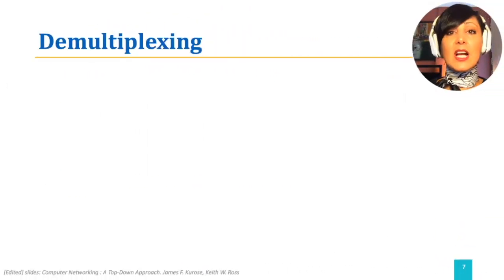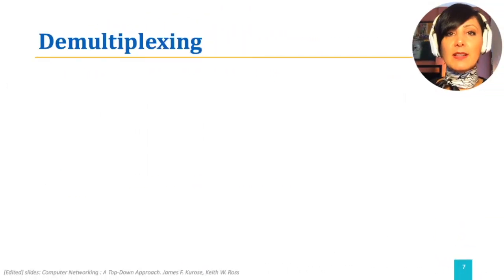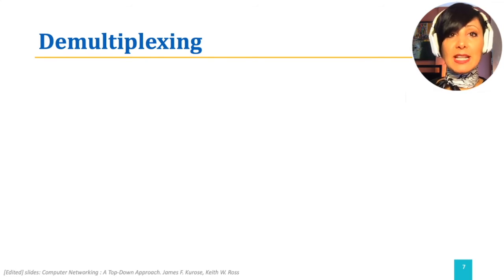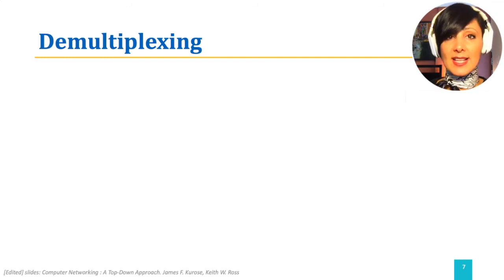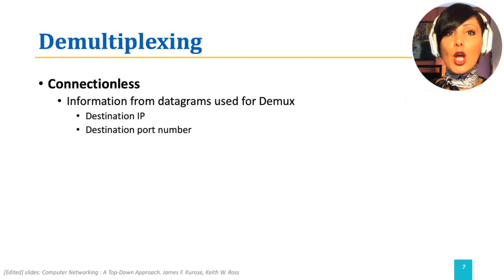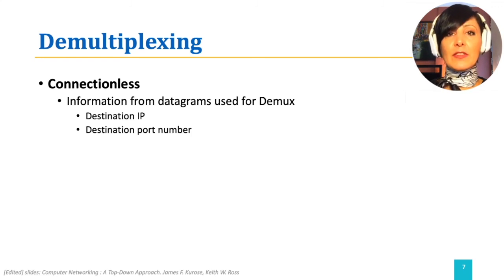TCP is connection-oriented, and UDP is connectionless. What do those words mean in terms of the transport layer service of identifying and delivering segments among processes? In connectionless demultiplexing, only the destination IP address and destination port number are used for delivering the segments to the processes.